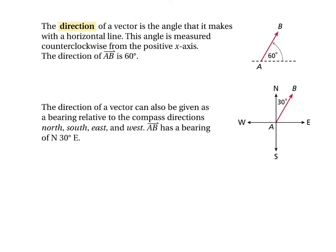The direction of a vector is the angle it makes with a horizontal line. For example, if the angle is 60 degrees, the direction of vector AB is 60 degrees. You can also give direction using north, south, east, and west bearings — for instance, vector AB could have a bearing of N30°E, which is equivalent to 60 degrees from the horizontal.